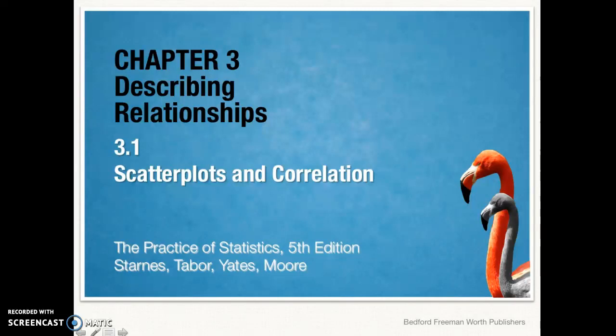Hello ladies and gentlemen, this is Ms. Skokin back with another AP Statistics lesson. This time we're in Chapter 3, which is all about describing relationships between bivariate data, so an X and a Y. Section 3.1 is all about scatter plots and correlations, so let's go ahead and get started.